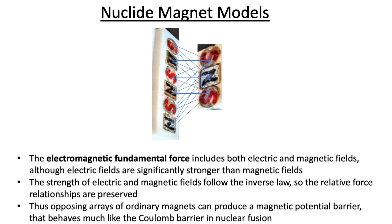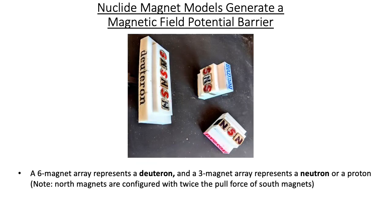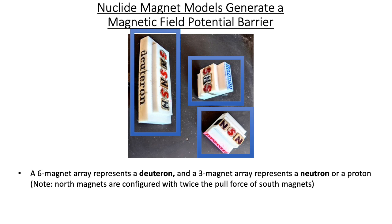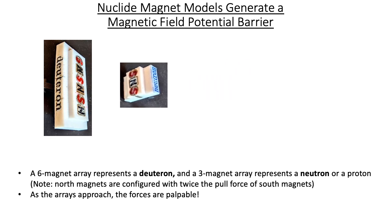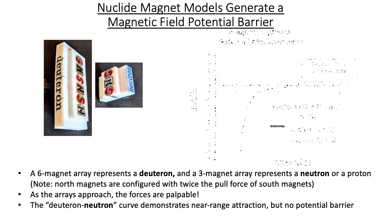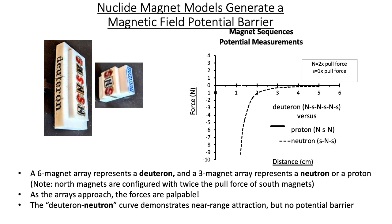Appropriately configured magnet arrays can produce a potential barrier that behaves like the Coulomb barrier in nuclear fusion. A six-magnet array may represent a deuteron, and a three-magnet array may represent a neutron or a proton. In these arrays, north magnets are configured to have twice the pull force of south magnets. The deuteron-neutron curve demonstrates near-range attraction but no potential barrier, consistent with what we know about neutron fusion.